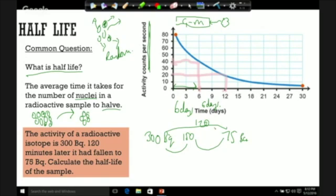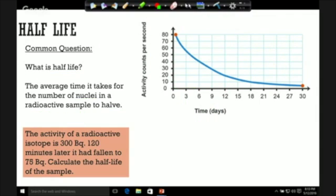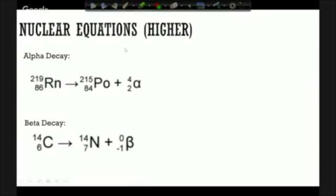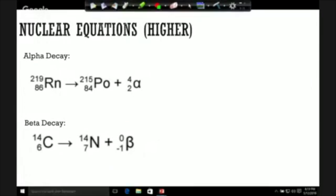So just moving on here to nuclear equations now. This is for higher tier. Alpha decay—first of all, we can write this as a nuclear equation which you'd need to complete for the higher tier paper only. So if you are foundation, feel free to listen through, but just bear in mind you won't have to do these for the exam.